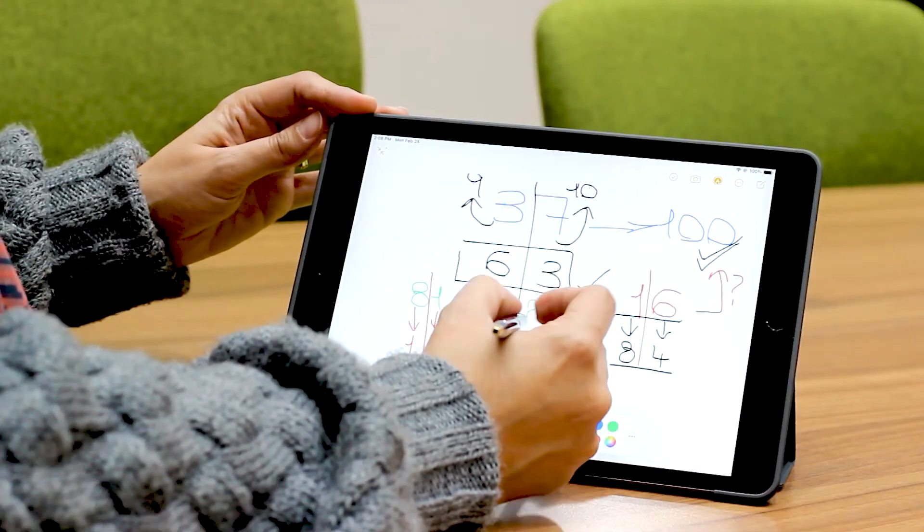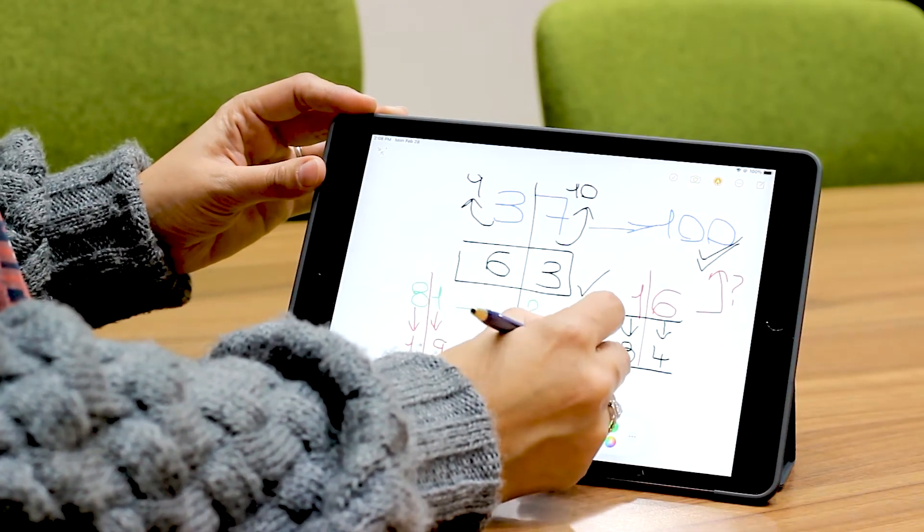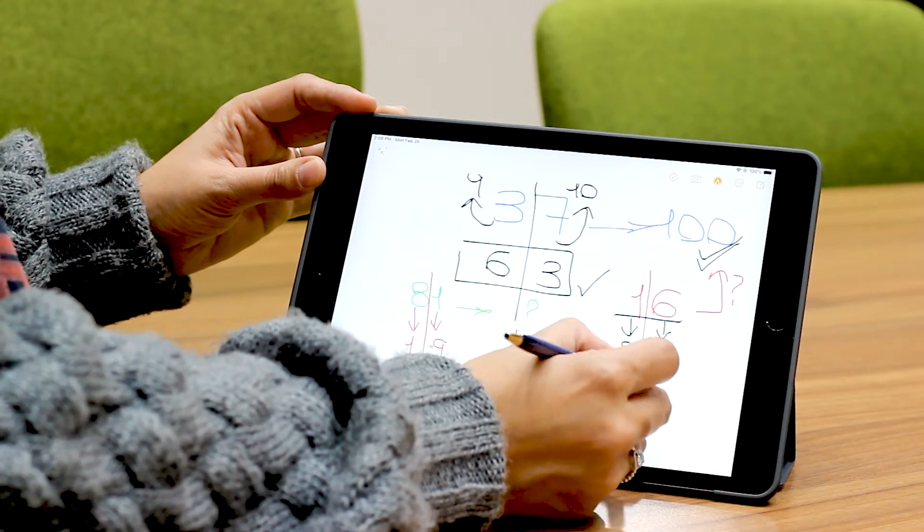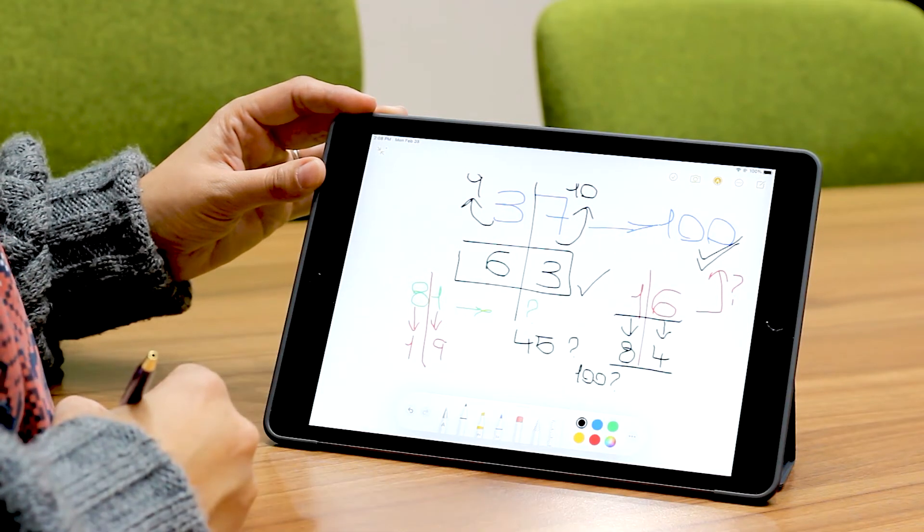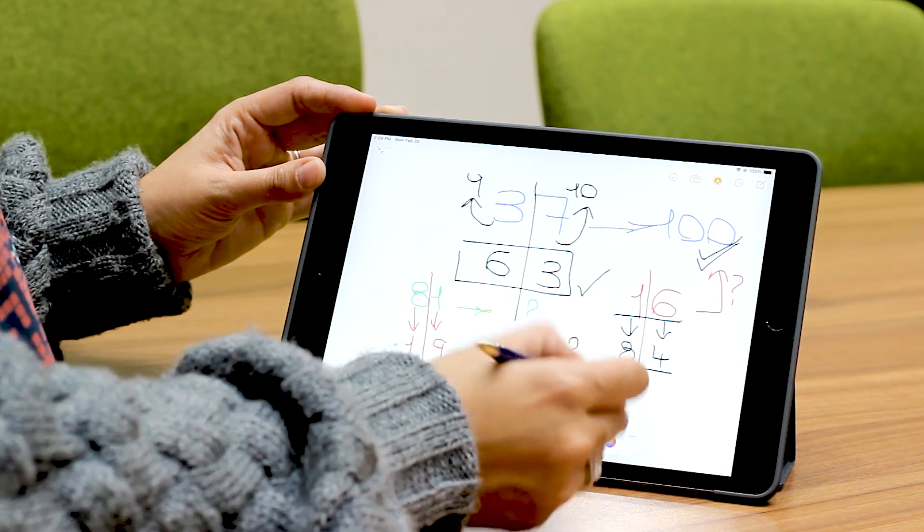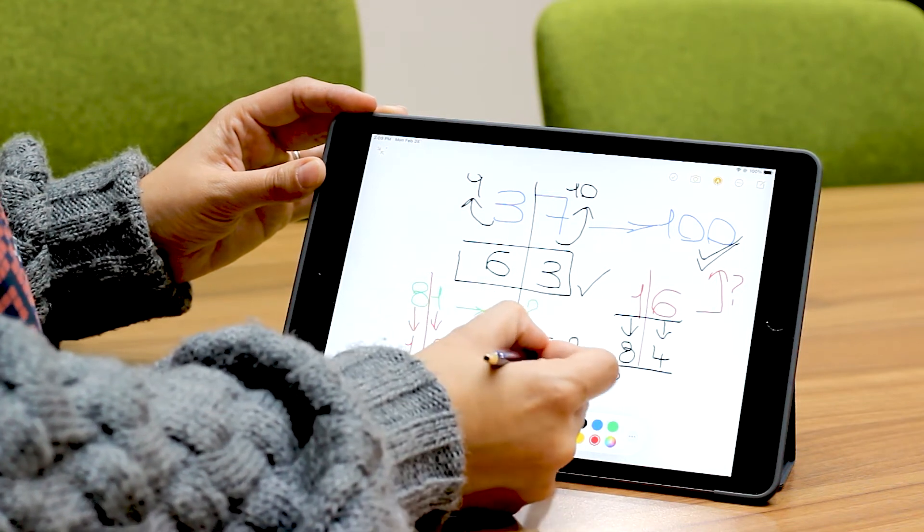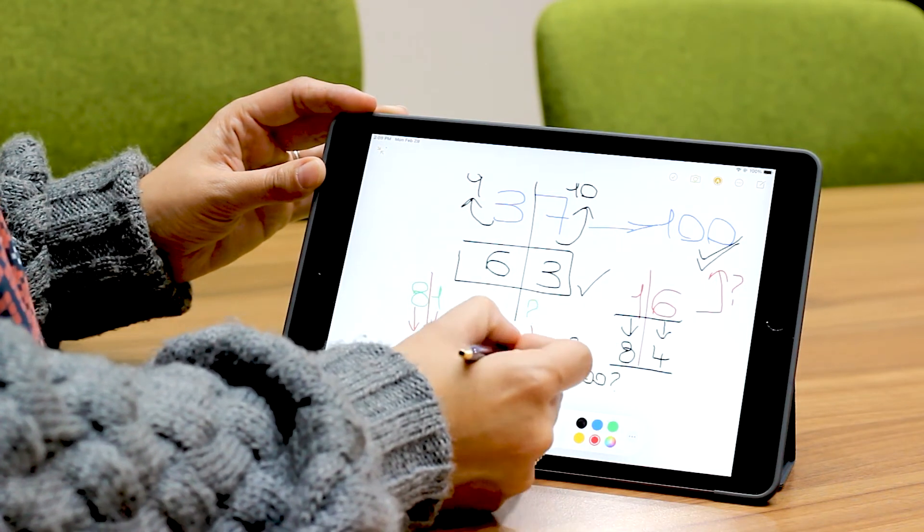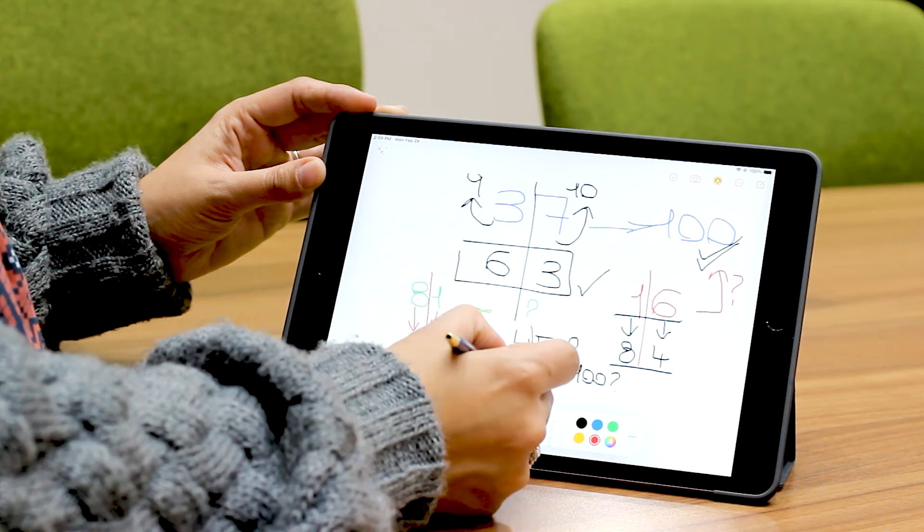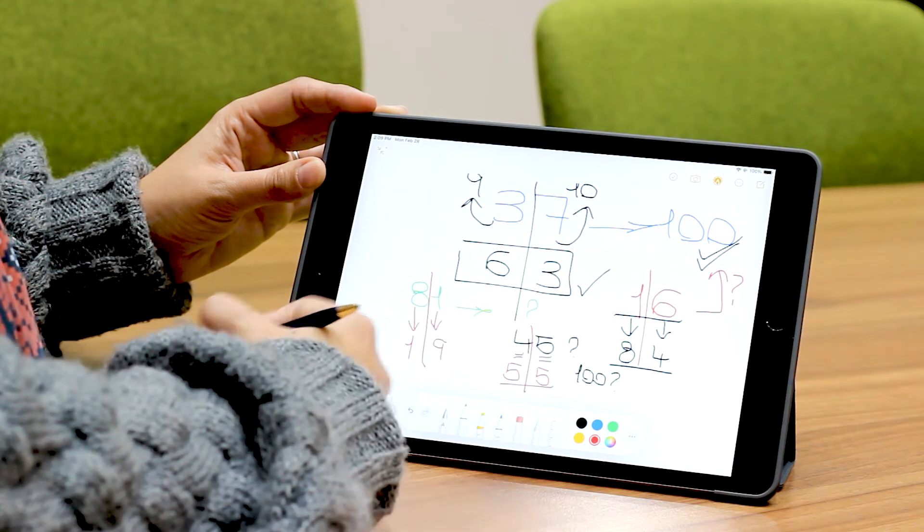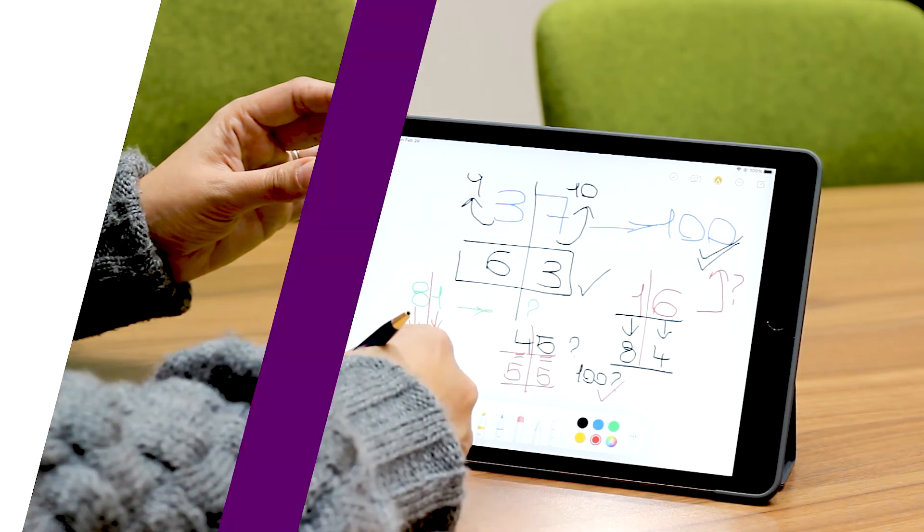If I have the number 45, what do I add to get 100? Can you do it on your own? Let's check. To have here a 10, I will need a 5. To have here a 9, I will need a 5. This means that 55 plus 45 is 100.